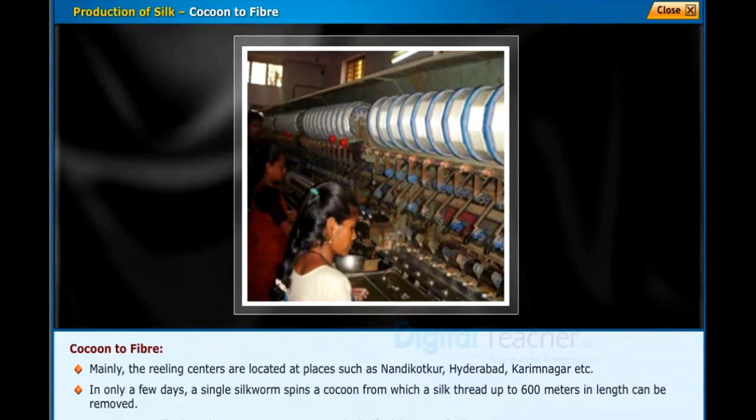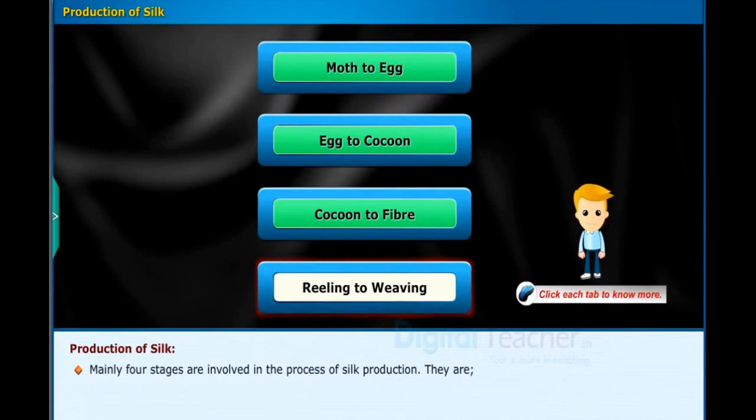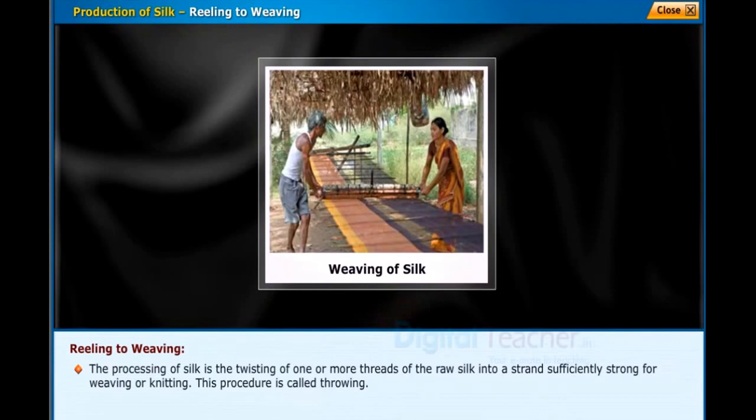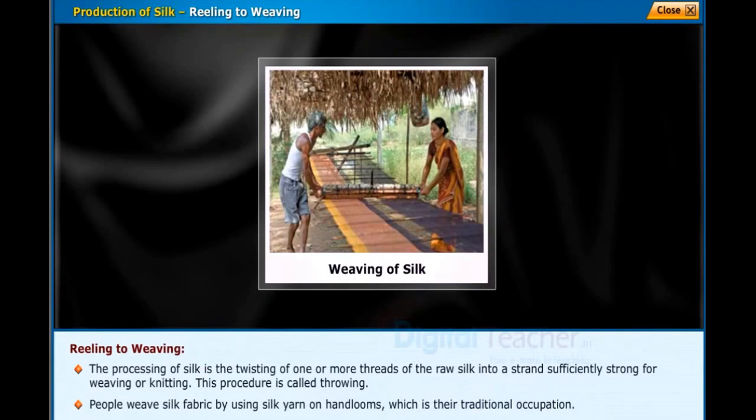The processing of silk involves the twisting of one or more threads of raw silk into a strand sufficiently strong for weaving or knitting. This procedure is called throwing. People weave silk fabric by using silk yarn on hand looms, which is their traditional occupation. They get the silk yarn from the reeling centers.